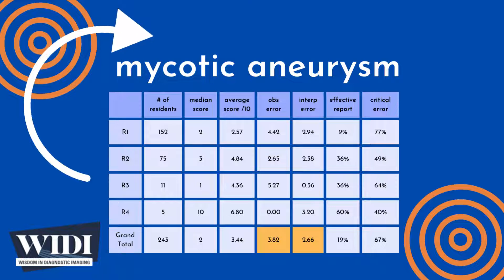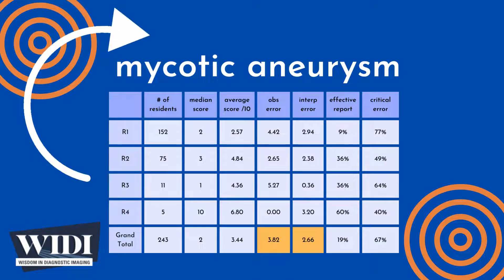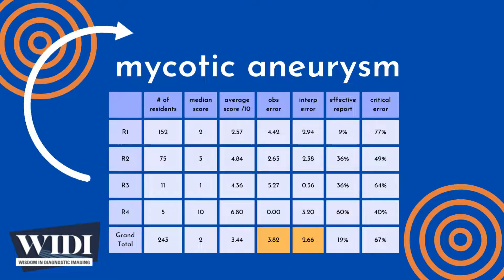On average, 3.82 points out of 10 were lost due to missed observations. At the same time, 2.66 points were lost due to interpretive errors.